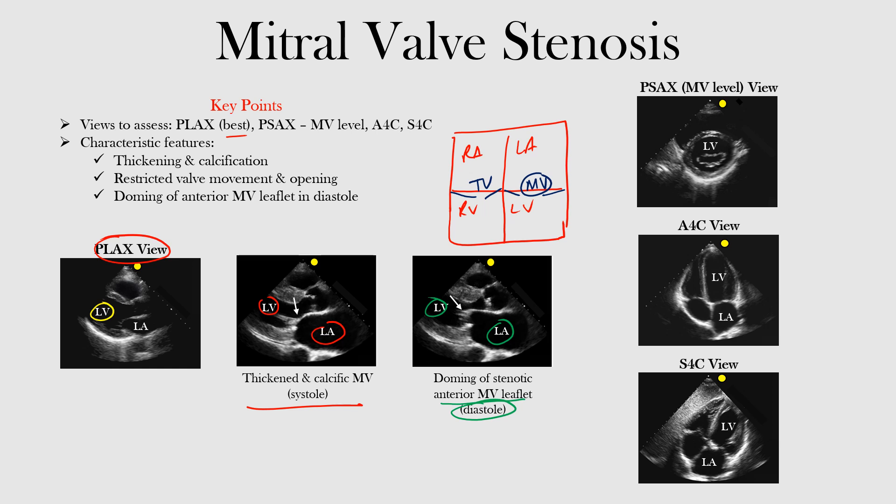That doming is another finding you can see in mitral valve stenosis. This parasternal long axis view is the best view to assess for mitral valve stenosis — it's the main one to focus on. We'll also look at the other views, specifically what we're looking for and how to locate that mitral valve.